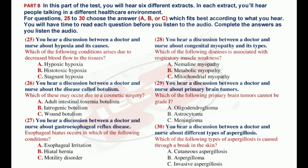That is the end of Part B. Now look at Part C. Part C. In this part of the test, you'll hear two different extracts. In each extract, you'll hear health professionals talking about specific aspects of their work. For questions 31 to 42, choose the answer A, B or C which fits best according to what you hear. Complete the answers as you listen to the audio. Now look at Extract 1. Extract 1, questions 31 to 36. You hear the lecture given by a physician on different categories of strokes and their location. You have 90 seconds to read questions 31 to 36.